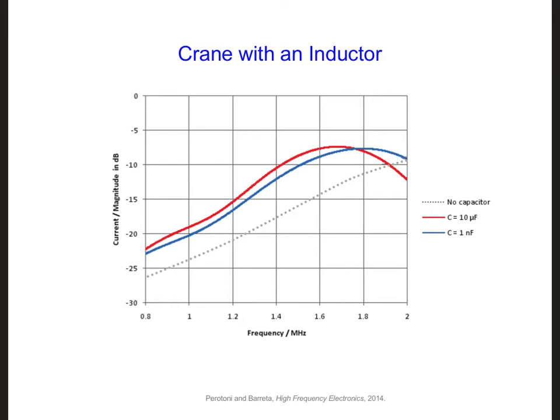In their case, they simulated a pulse instead of a sinusoid so that they could take the DFT and get the spectrum, or the behavior of the current over a range of frequencies. Here is a plot they obtained for two different capacitance values, the same values that we tried.